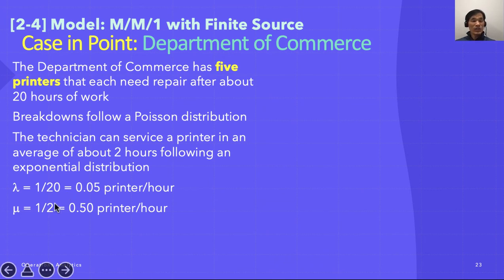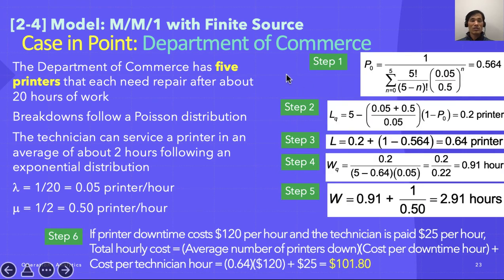Lambda is 1 over 20 because it says each needs repair after about 20 hours of work. So one is going broken every 20 hours, so lambda equals 1 over 20. Mu is 1 half because the technician can service a printer in an average of about two hours following an exponential distribution. So every two hours, one can be done. Mu equals 1 over 2 is half printers per hour can be serviced. We have to find a unit of analysis that is going to be done by hour, and we found lambda and mu from the information given here.